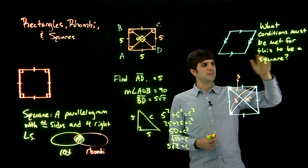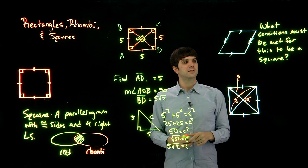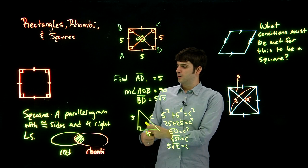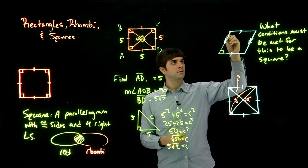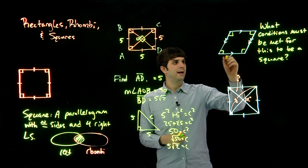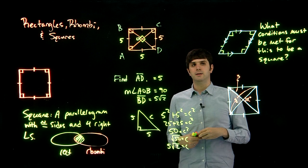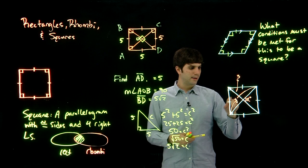Moving on to this, we have a parallelogram here. So what conditions must be met for this to be a square? So we have a parallelogram, what needs to happen to this for it to be a square? Well again, we go back to our definition of a square, that's a parallelogram with congruent sides and four right angles. So I guess the answer would be, all of these angles need to be right angles. It doesn't look like they are, but that's why it needs to happen. And all of these sides need to be congruent. So the angles need to be 90 degrees, and the sides need to be congruent.